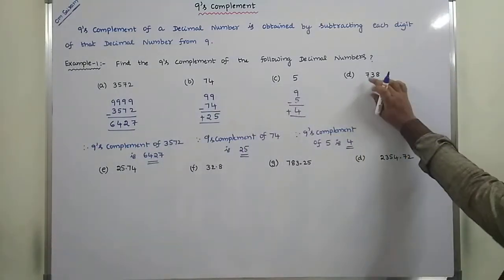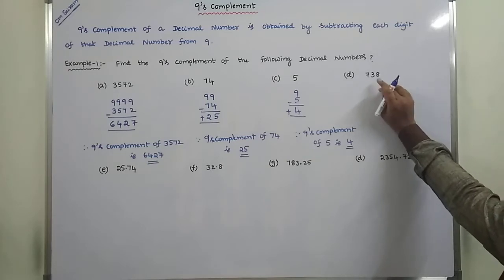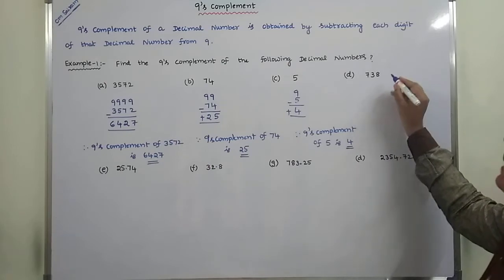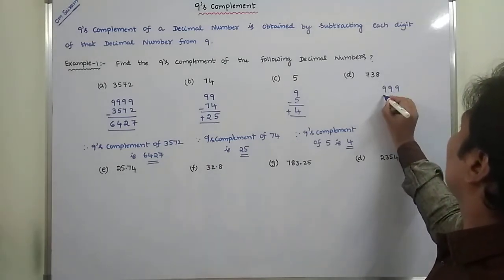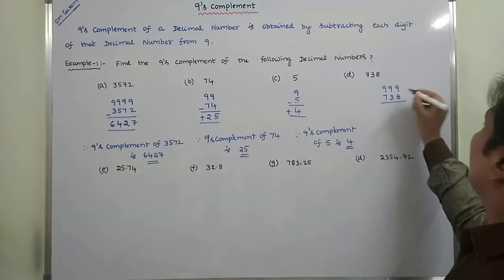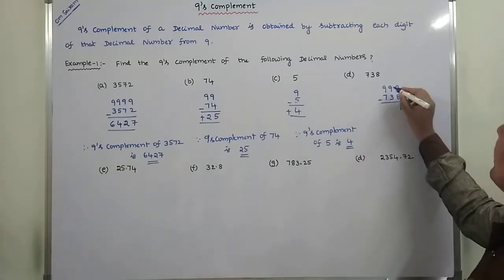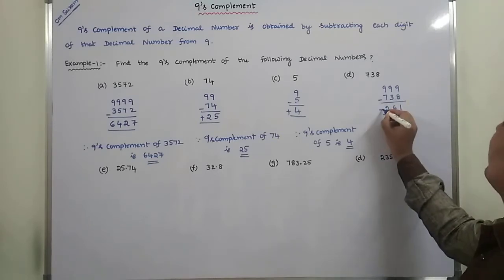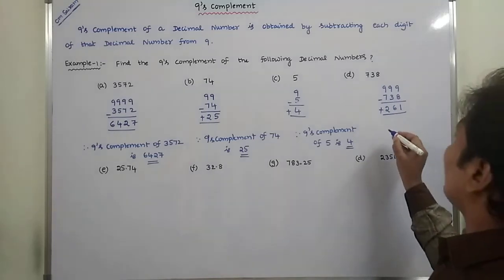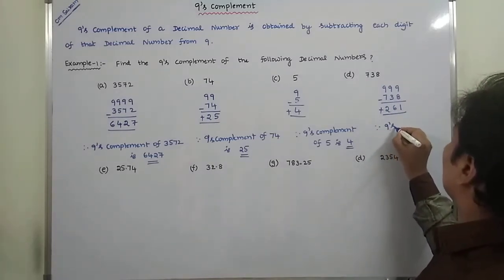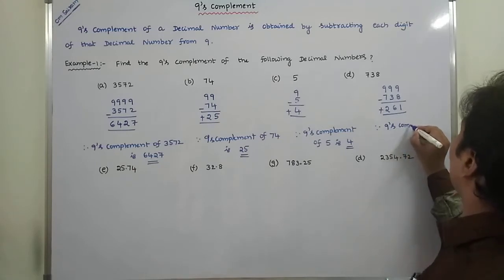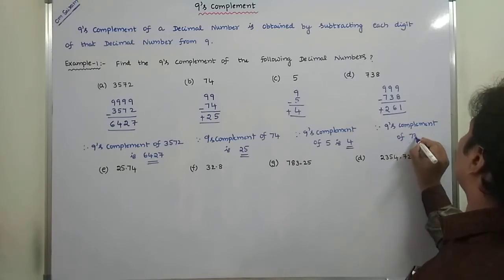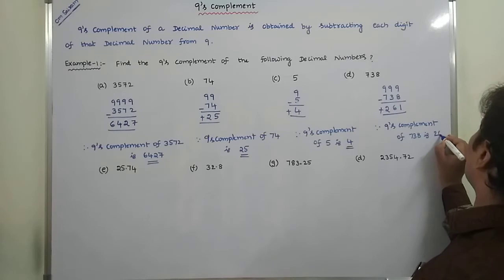Fourth problem. Find the 9's complement of 738. How many digits are there? Three digits are there. Each digit is subtracted from 9. 9 minus 8 is 1, 9 minus 3 is 6, 9 minus 7 is 2. So the result is 261. Therefore, the 9's complement of 738 is 261.